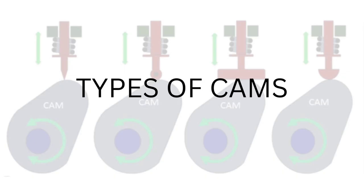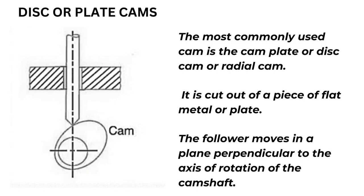Types of cams. Disc or plate cams: the most commonly used cam is the cam plate, or disc cam, or radial cam. It is cut from a piece of flat metal or plate. The follower moves in a plane perpendicular to the axis of rotation of the camshaft.